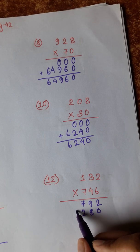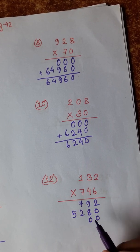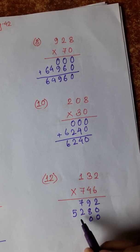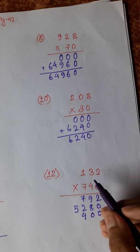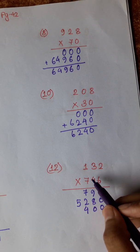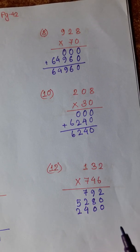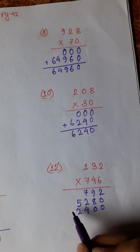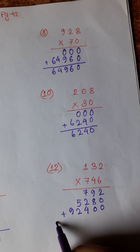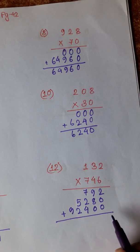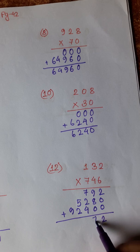1. 4 twos are 4 plus 1 is 5. 7 twos are 14, 1. 7 twos are 21 plus 1 is 22, 2. 7 twos are 7 plus 2 is 9. 9 plus 8 is 17, 1. 4, 1.